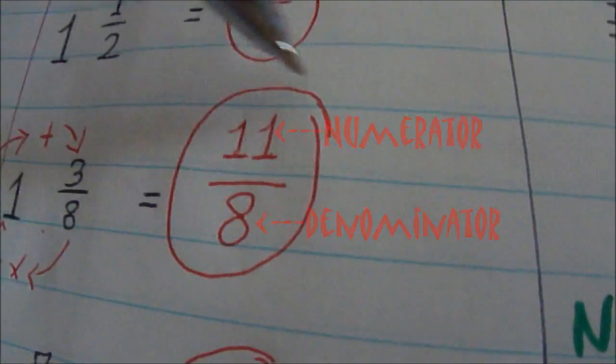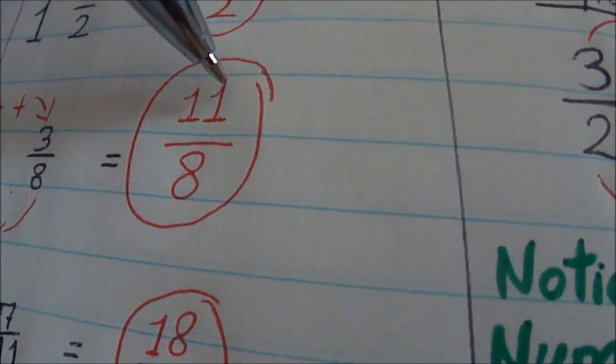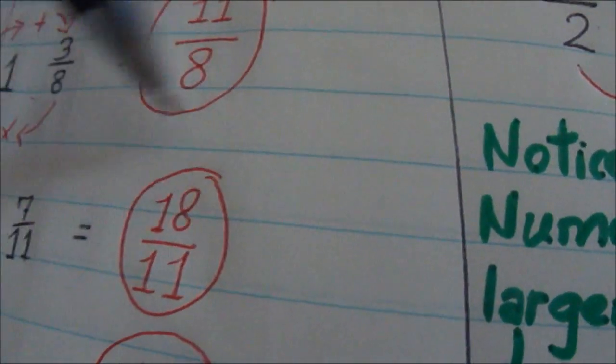11 over 8. 11 is larger than 8, so that's an improper fraction because the numerator is bigger than the denominator. 18 over 11, again, an improper fraction.